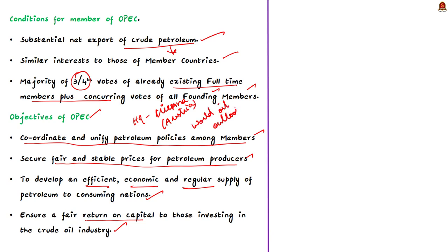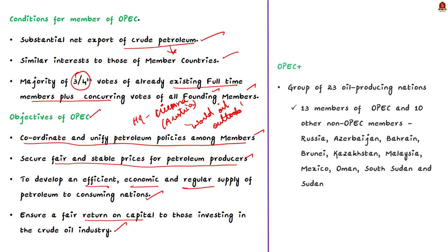It is a group of 23 oil producing nations made up of 13 members of the OPEC and 10 other non-OPEC members, which includes Russia, Azerbaijan, Bahrain, Brunei, Kazakhstan, Malaysia, Mexico, Oman, South Sudan, and Sudan. Know that OPEC plus format was born in the year 2016.